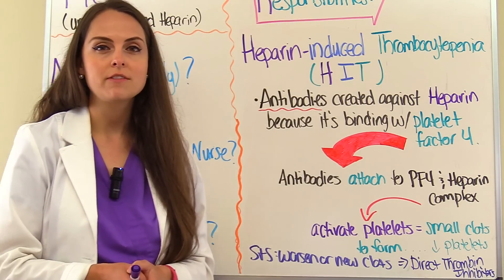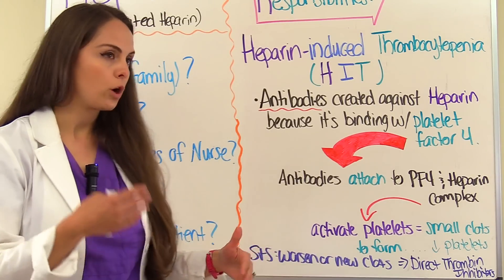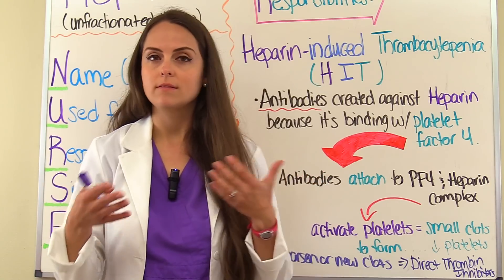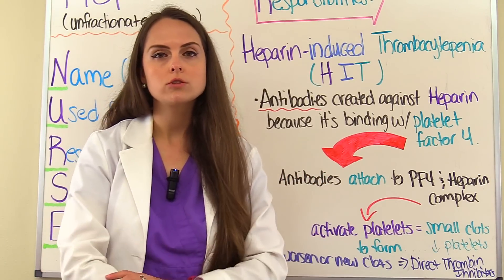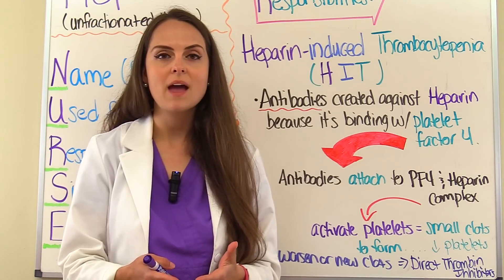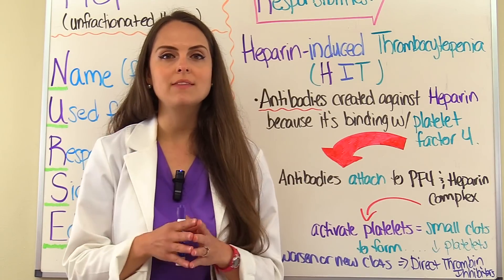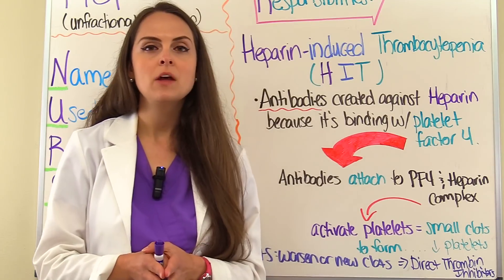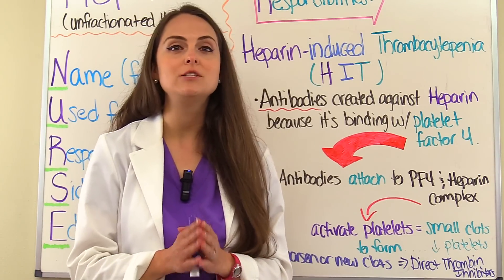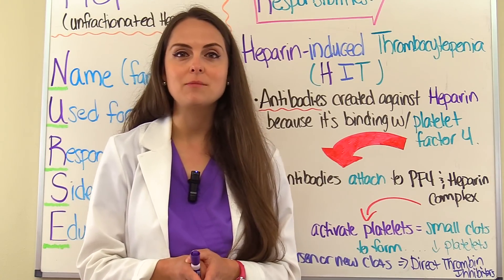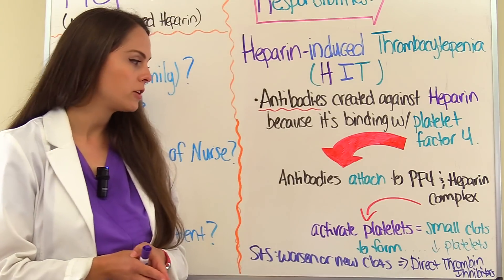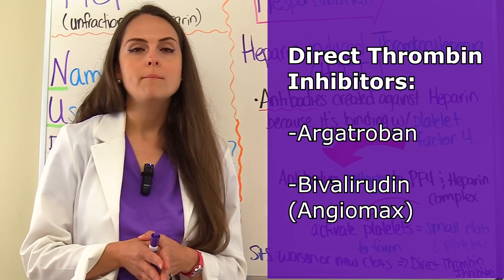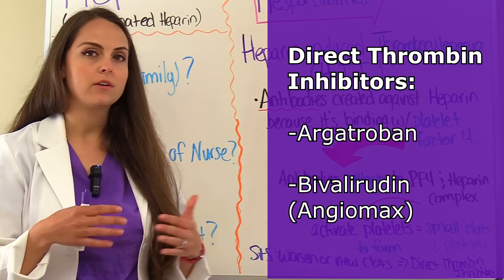Other things to look out for beyond a low platelet count are worsening or new clots developing. Depending on where the clot is will determine the signs and symptoms — a new DVT could present as a warm, hardened, swollen area; in the lungs it could be chest pain and shortness of breath; going to the brain, they can have mental status changes. If HIT develops, as a nurse you can expect the heparin drip to be discontinued, it will be documented in the patient's health history that they should never receive heparin again, and they can be started on another anticoagulant from the direct thrombin inhibitor family, such as argatroban or bivalirudin (Angiomax).